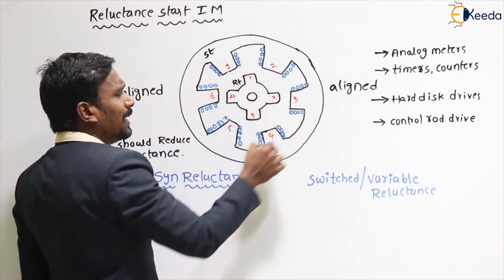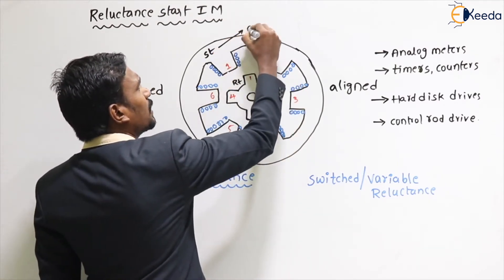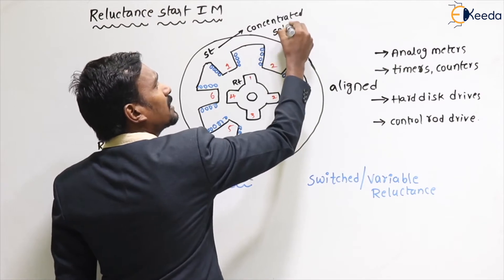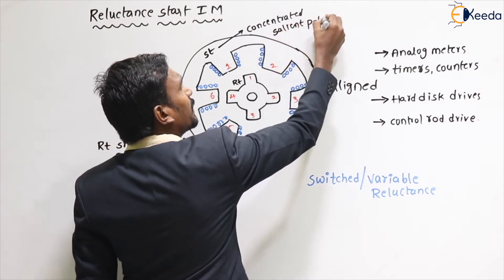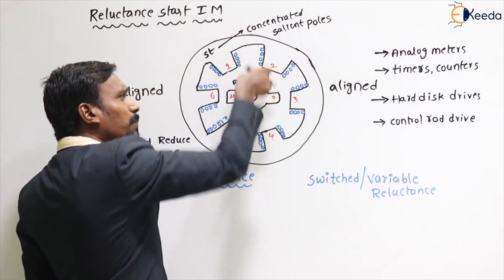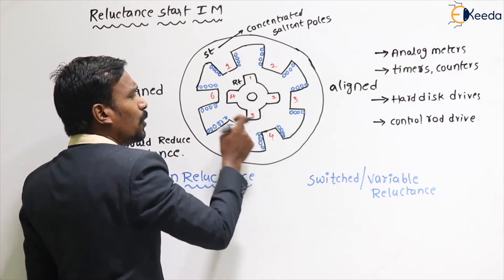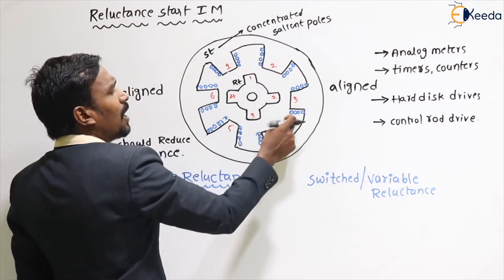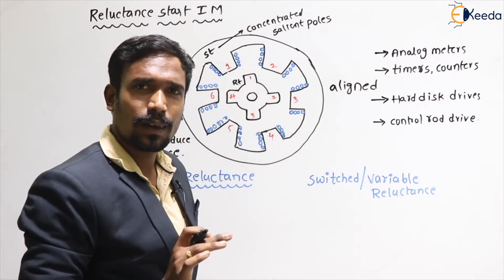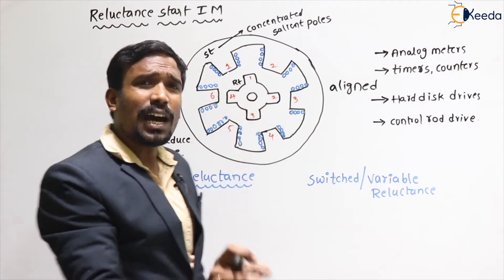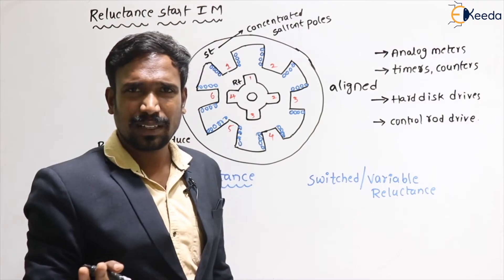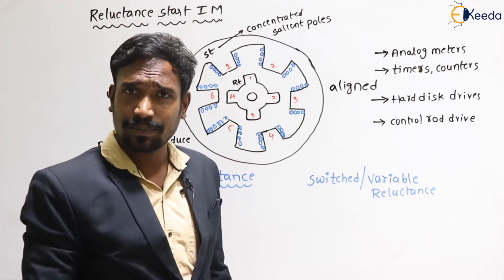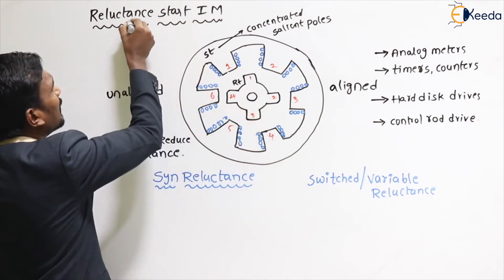The stator has concentrated winding and projecting poles, also called salient poles. There are six projecting poles, and these poles have a concentrated winding. The rotor doesn't have any winding.